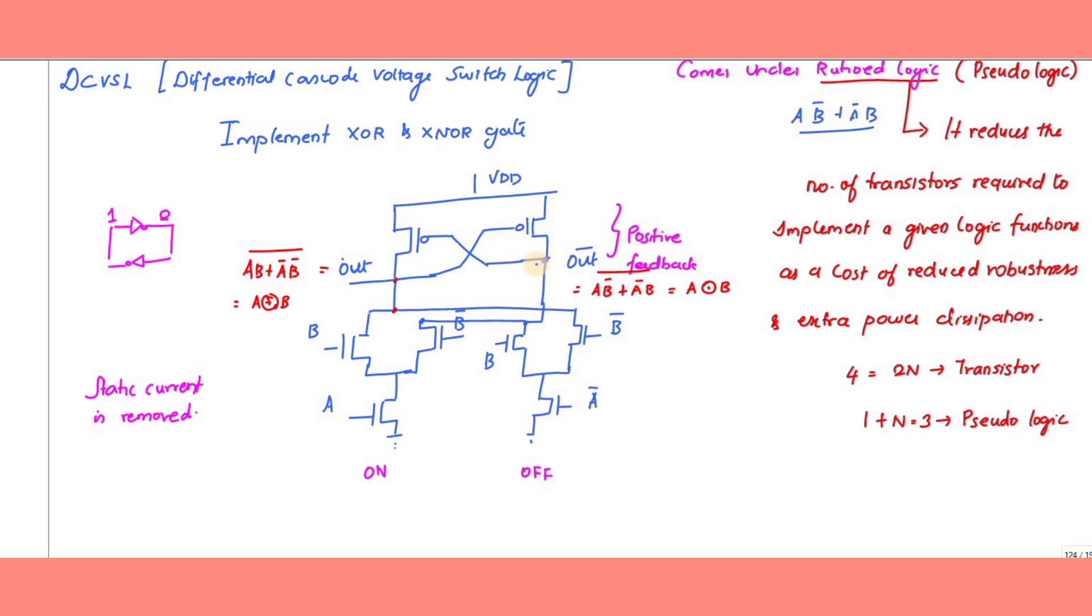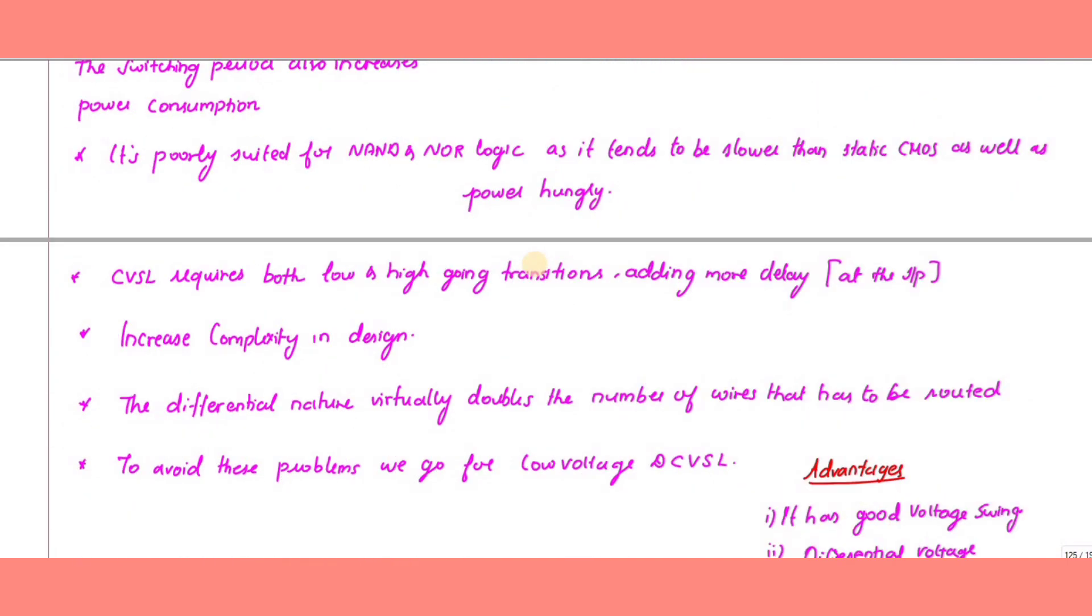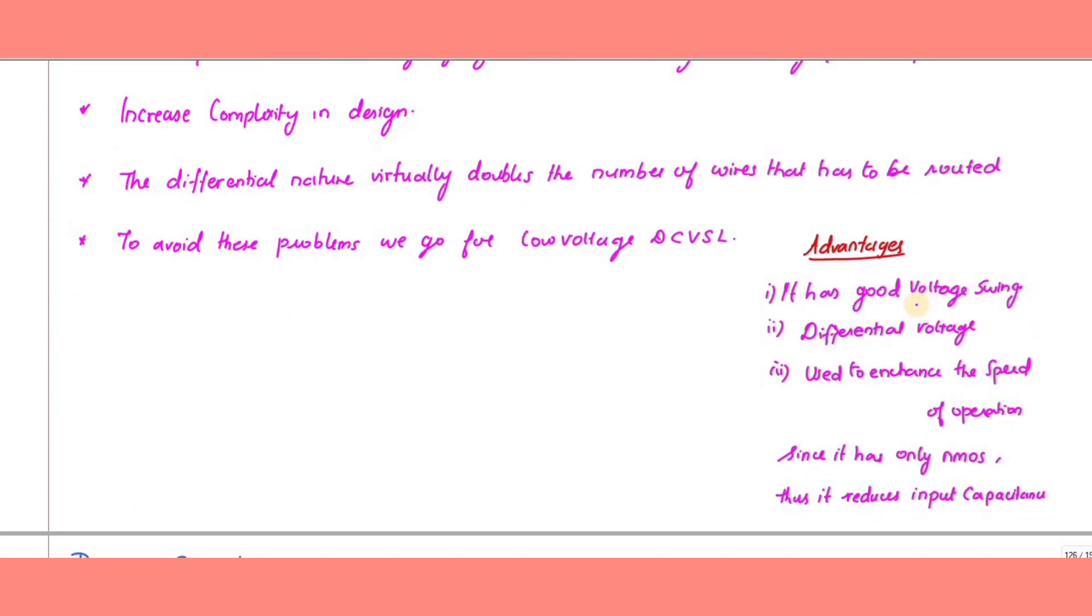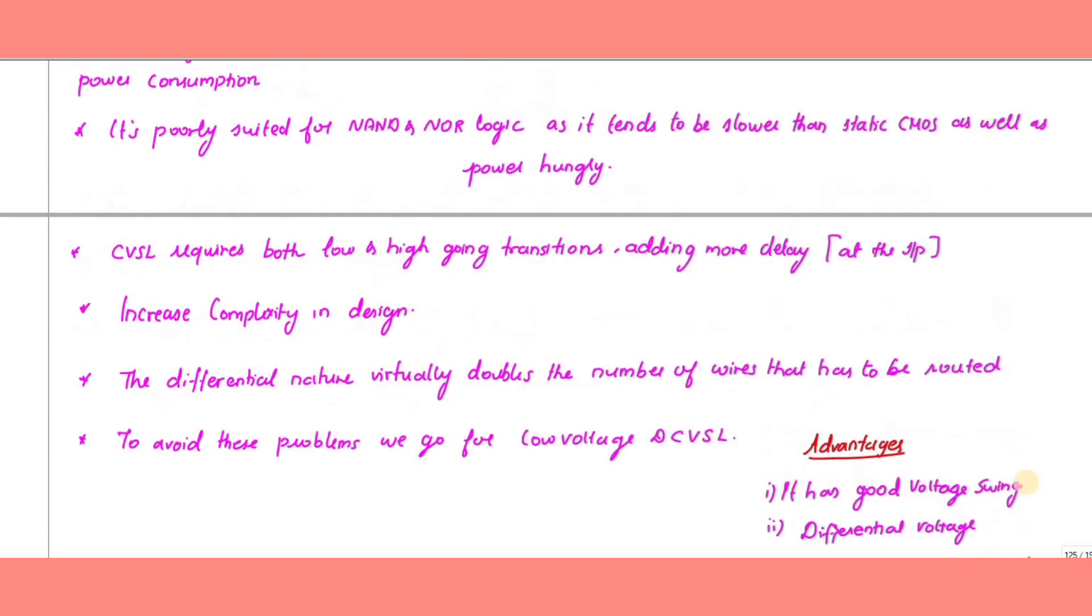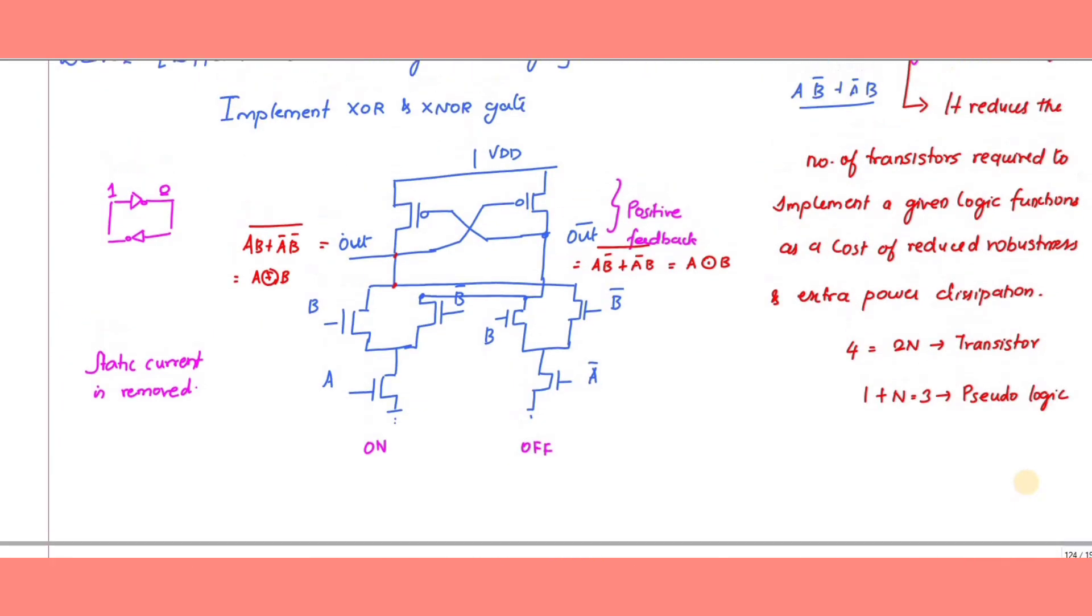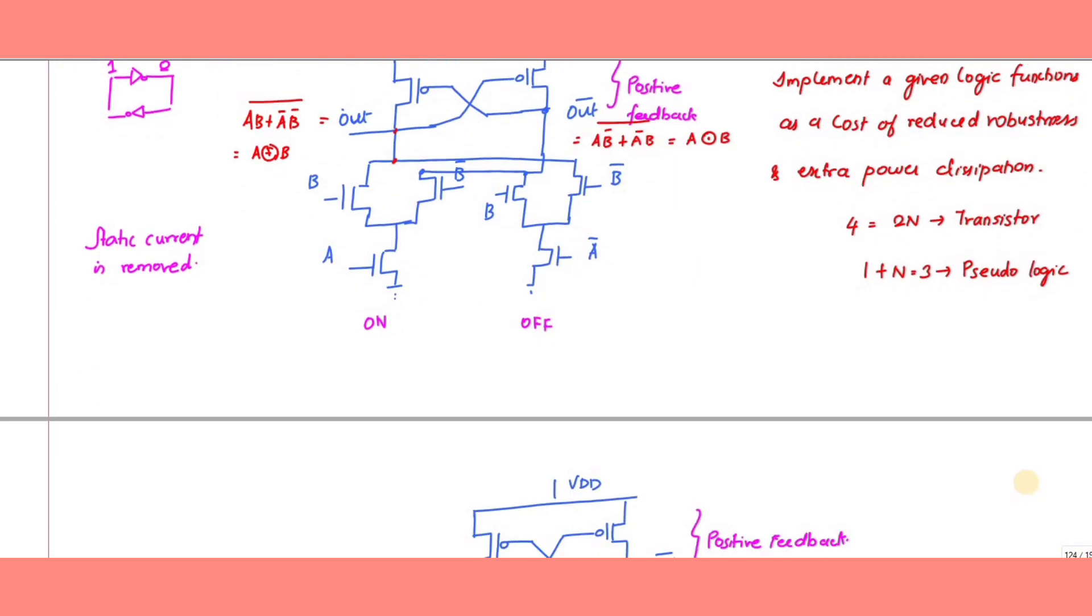This is an advantage: the output will go to either zero or one, providing very good voltage swing. It has the advantage of differential voltage—if one output is one, the other is zero. Since the logic is implemented using only NMOS transistors, the speed of operation is higher and input capacitance is reduced.